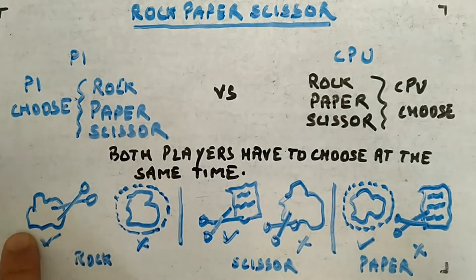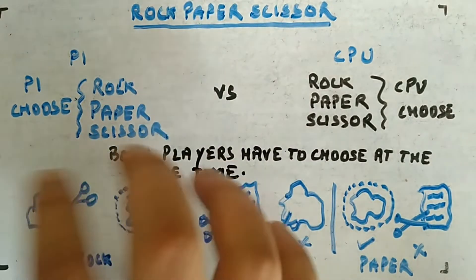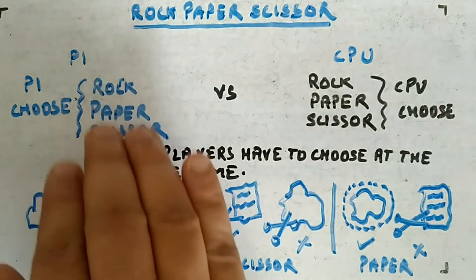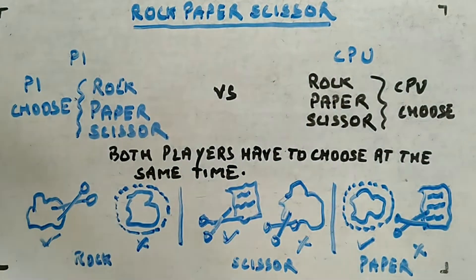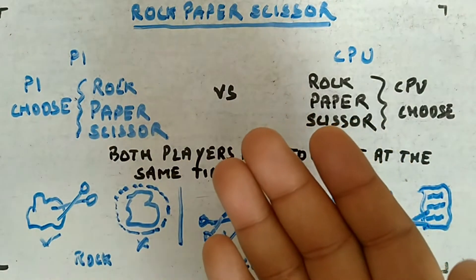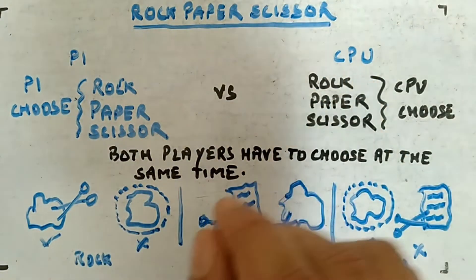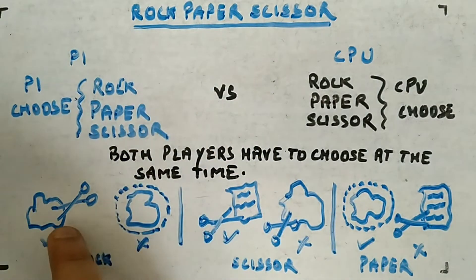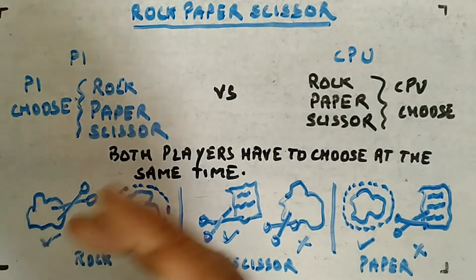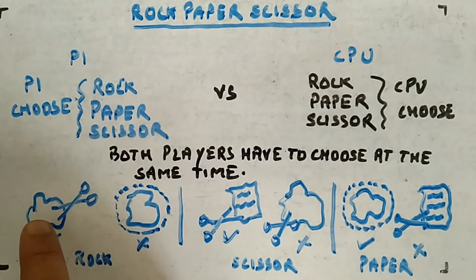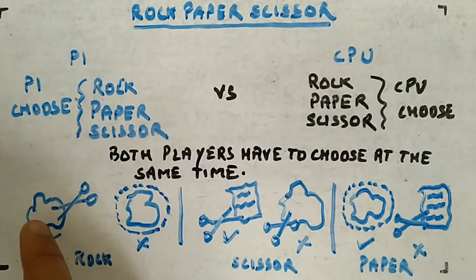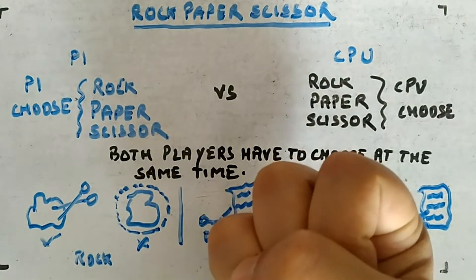On the whiteboard, I'm showing rock, scissor, and paper. The results are generated based on these: if player one chooses paper and the CPU chooses rock, paper can wrap the rock, so paper wins. If the CPU chooses rock but player one chooses scissor, scissor will not be able to cut the rock, hence rock will win.